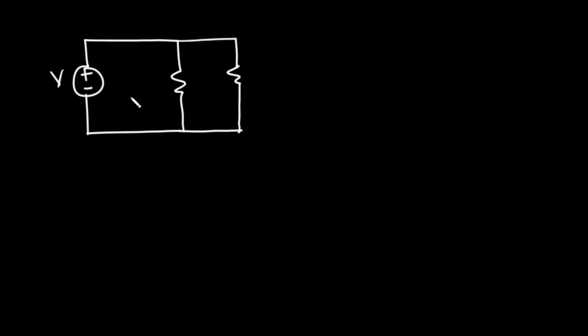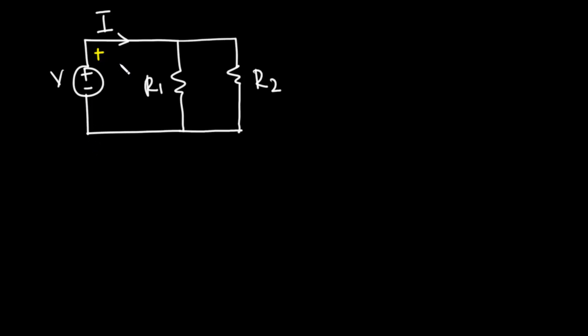Now let's consider a simple electrical network where we have a voltage source V connected across two parallel resistors. Let's call the first resistor R1 and the second resistor R2. The voltage source is going to drive current I throughout the circuit — I being the total current. The current moves from higher potential and flows towards node A.